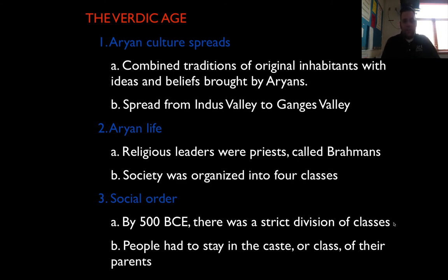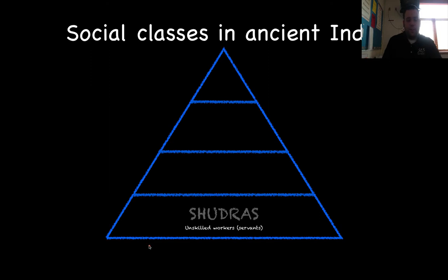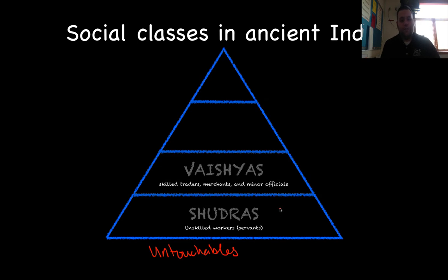Around 500 BCE, this is where the strict division of classes happens. The first is the Shudras — these are the unskilled workers, the servants. There was also a group below them later known as the Untouchables, who were the lowest of the low. Next, you have the Vaishyas — these are your skilled traders, merchants, and minor officials. You can think of them as the middle class of today.